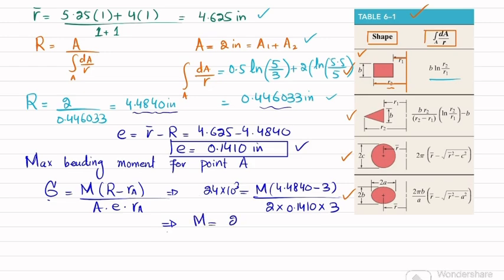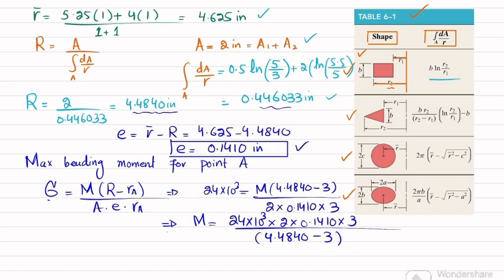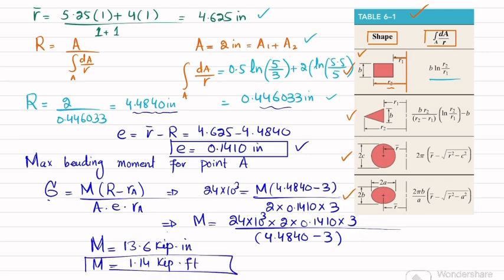Solving for M at point A: M = (24 × 10³ × 2 × 0.1410 × 3) / (4.4840 − 3) = 13.68 kip·in. Converting to kip·ft: 13.68 / 12 = 1.14 kip·ft. This is the maximum moment based on the tension side at point A.